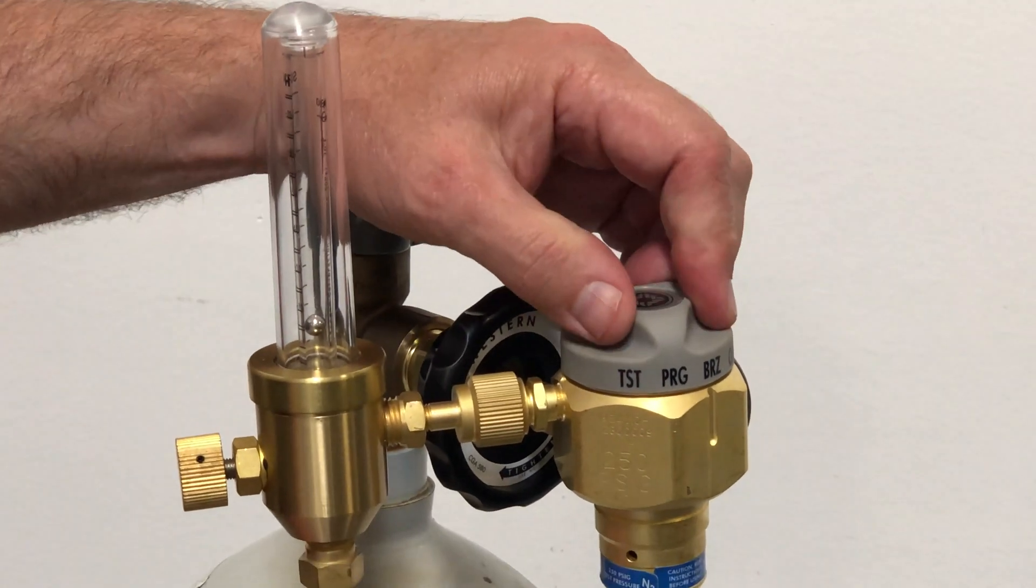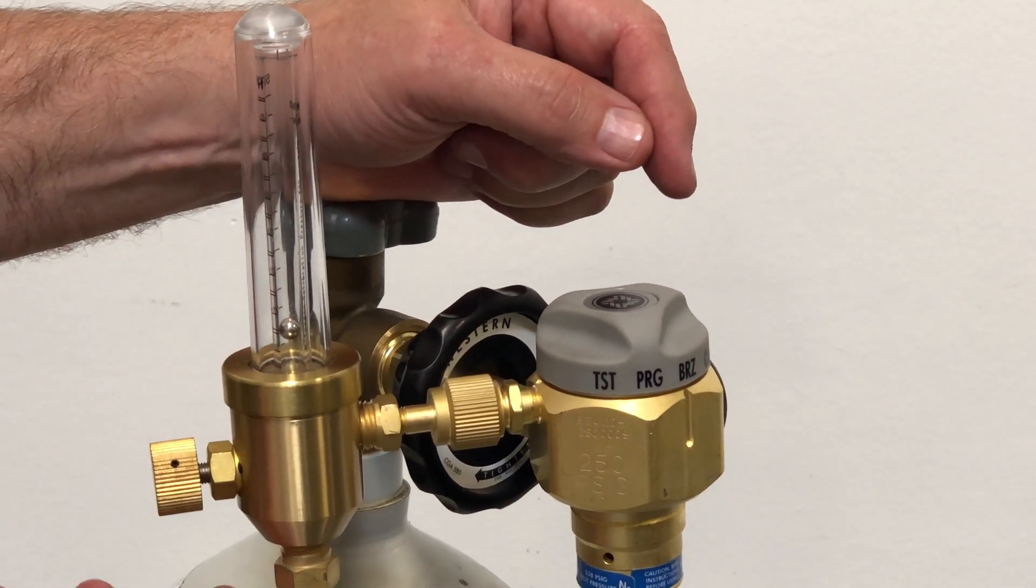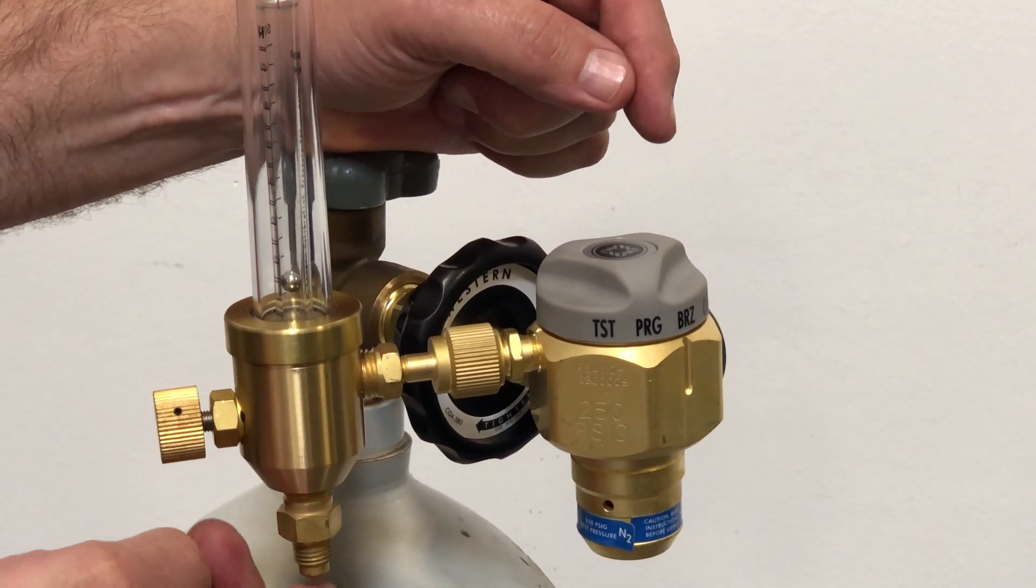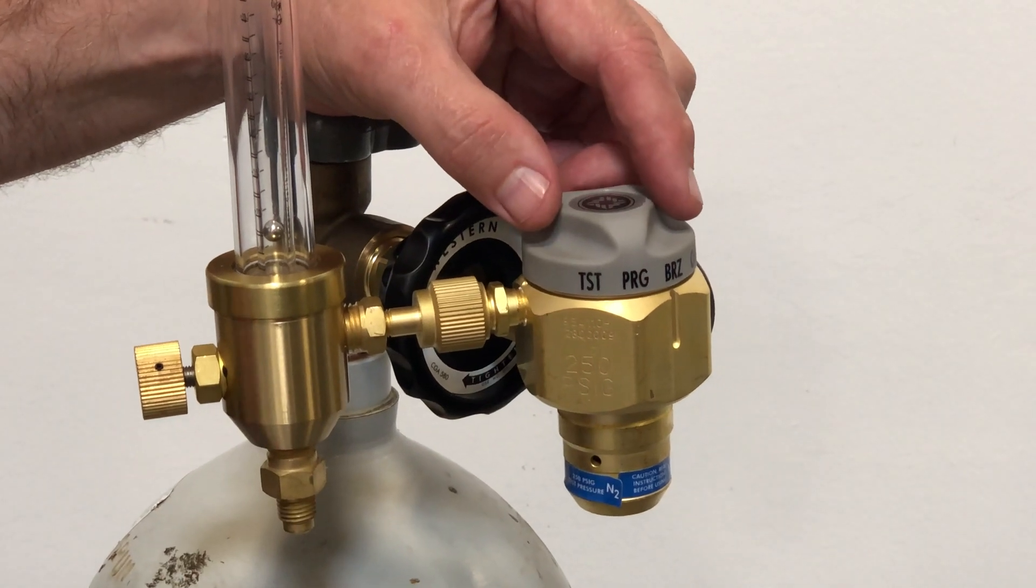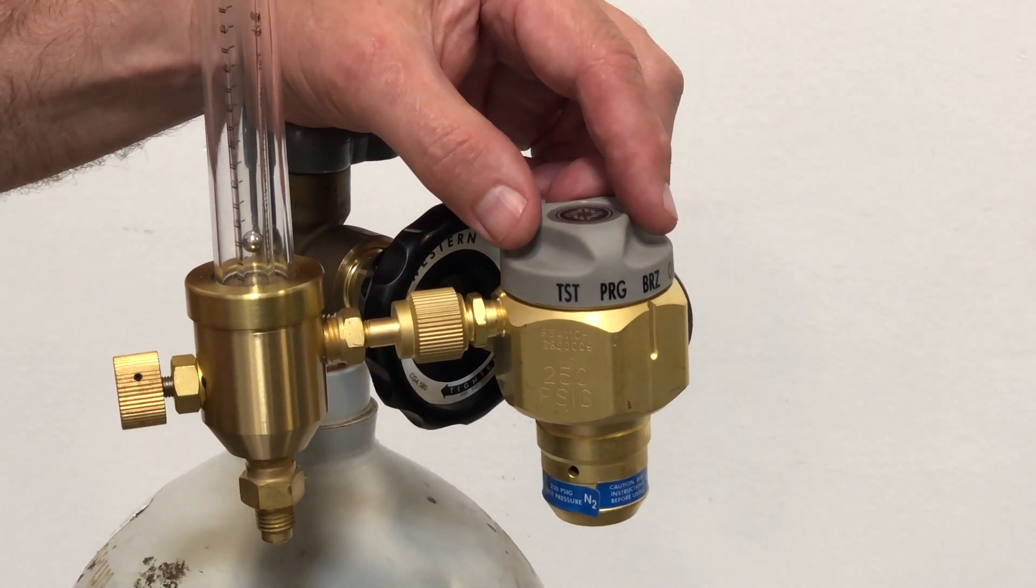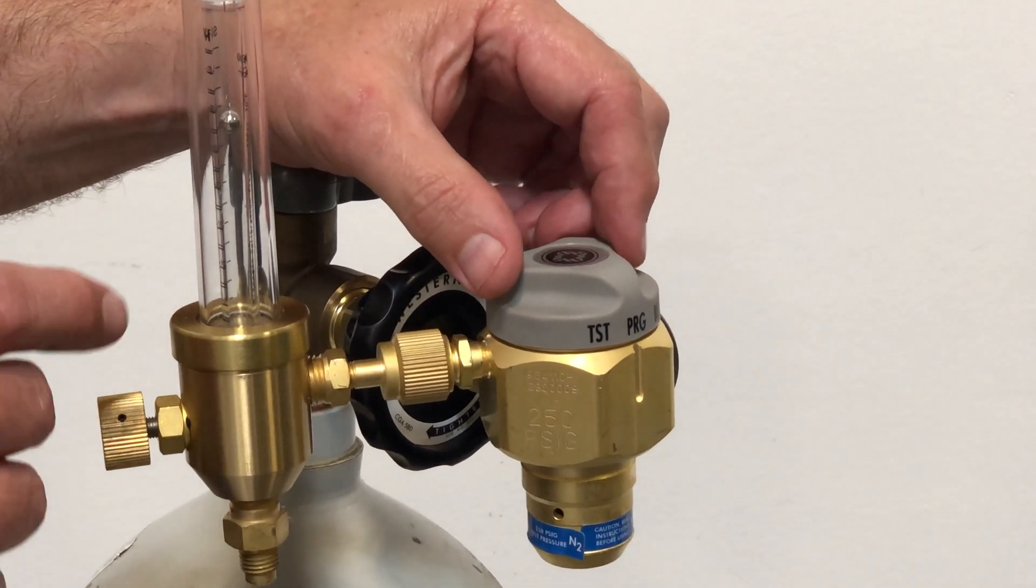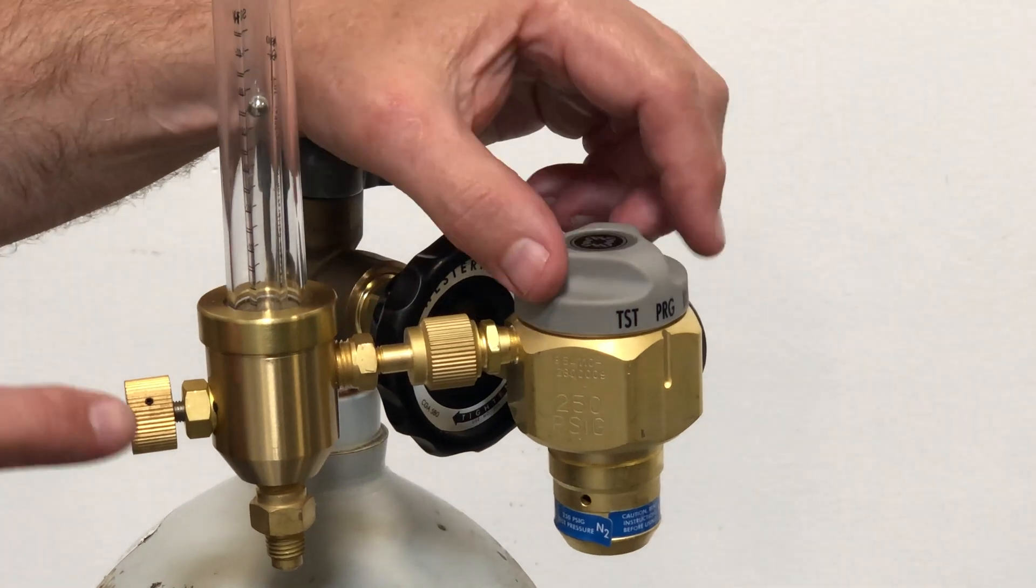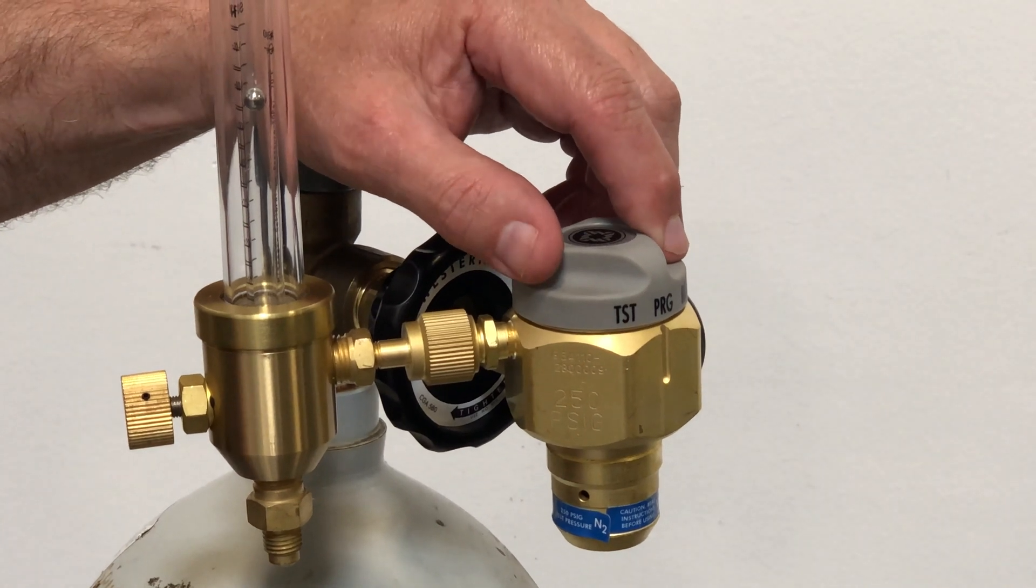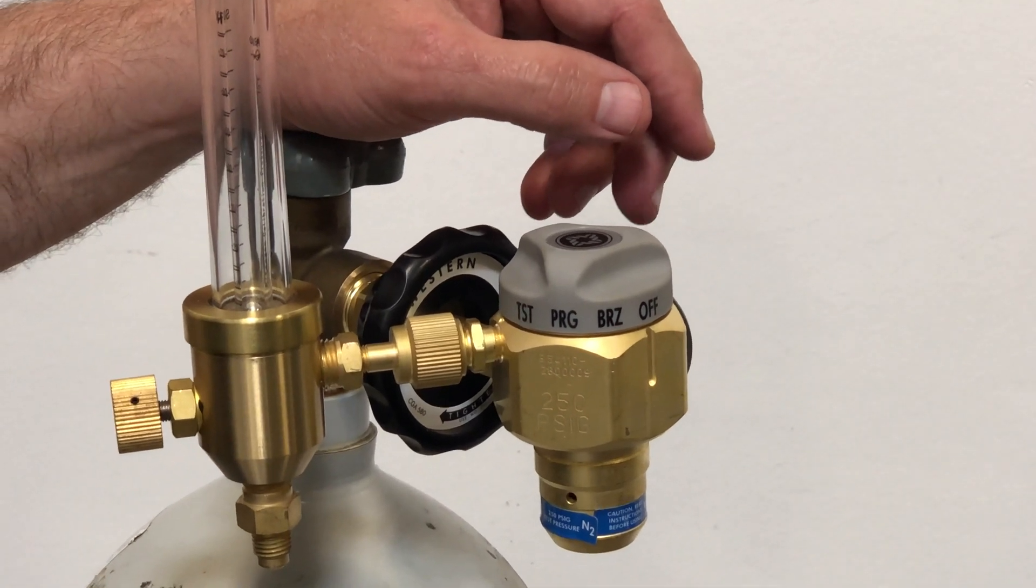Now when we get all done we're going to turn this to purge. Before I do that you can see this ball is floating. If I put my finger over this you'll see the ball will drop down because the flow stopped. You also hear the pressure building up because this regulator's set at 250 psi. When I turn it to purge, you can hear the flow substantially increased and we're now at about 60 standard cubic feet per hour of flow. This is to purge the atmosphere out so we want a pressure that's high enough to push everything out but low enough that it's not going to compress that moisture.